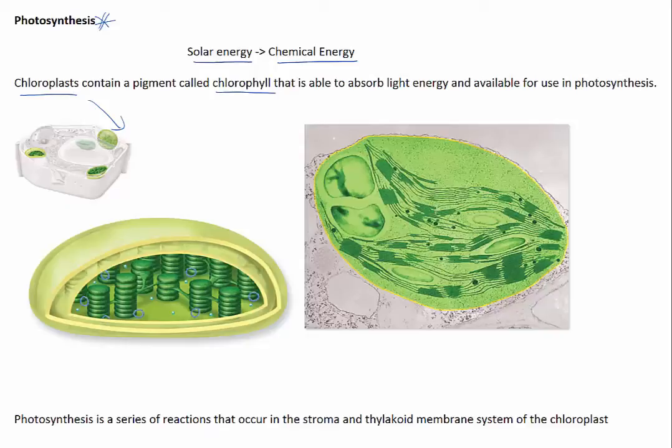Chloroplasts have two outer membranes surrounding the organelle. There is a third inner membrane called the thylakoid membrane that forms long folds within the organelle. The thylakoid membranes look like stacks of coins, although the compartments they form are connected like a maze of chambers.